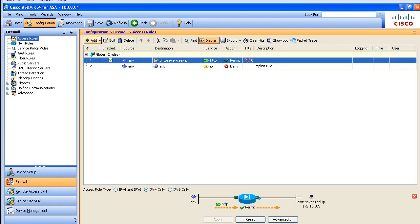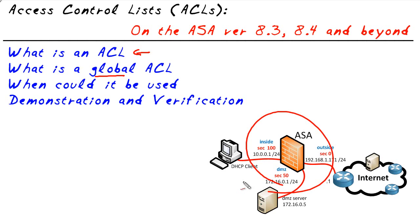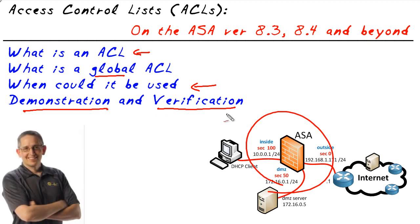So what have we covered in this micronugget? We've identified the purpose of an access control list — to override the default policy for initial traffic flows through an interface of the ASA. A global ACL logically applies permit or deny statements inbound on all interfaces, and it's only processed after an access list on an interface, if present. There's an implied deny at the end of the global ACL. It's ideal when lots of interfaces all have exactly the same need. We demonstrated its creation using ASDM and verified it worked by opening a browser. For a more in-depth look at the interaction between interface ACLs and global ACLs, visit the CCNP Security Firewall class at CBT Nuggets.